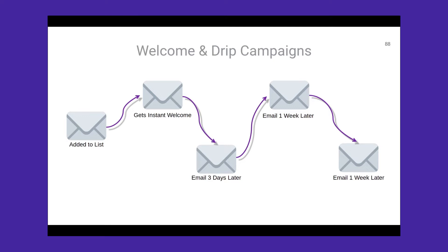Sometimes these welcome drip campaigns are called onboarding. Somebody does something — they buy something, they donate, they join your mailing list — and then a series of emails are staggered out to them over a period of time. For example, if they were making a donation to your non-profit, you could send three or four emails over a few weeks explaining how that money is used. Or if you're a company selling a product, you might send two or three emails helping people use that product better.